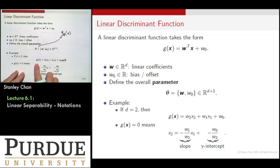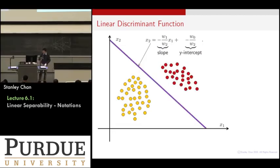So when you set this g(x) equals to zero, as what I have written down here, then you can move the terms around. So then you will have this expression of x2 equals to some number times x1 plus another number, and you realize that this is just a slope of a line, and then this is the y-intercept of a line.